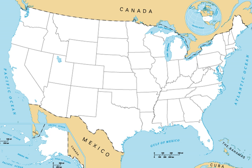Canada, but excludes Hawaii and insular territories. The greatest distance entirely within the 48 contiguous states is 2,802 miles, between Florida and the state of Washington. The greatest north-south line is 1,650 miles. Together, the 48 contiguous states and Washington, D.C. occupy a combined area of 3,119,884.69 square miles.